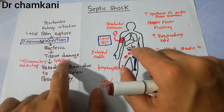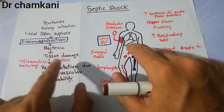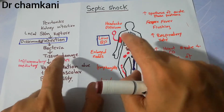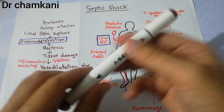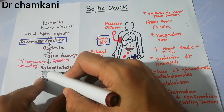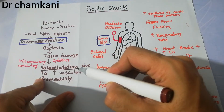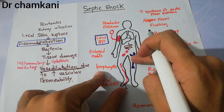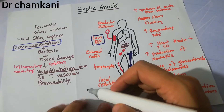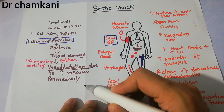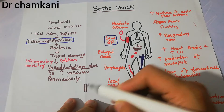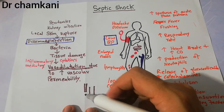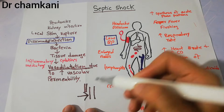In septic shock, the inflammatory mediators and cytokines released during sepsis most of the time cause vasodilation. They release inflammatory markers which cause blood vessels coming from the heart to different areas of the body to become dilated. This is similar to what we discussed in anaphylactic shock, hypovolemic shock, and neurogenic shock, where the tone of the blood vessels may be lost or vasodilators cause dilation.